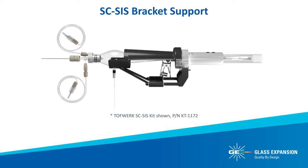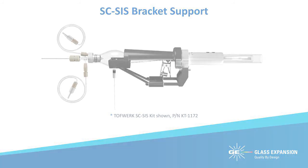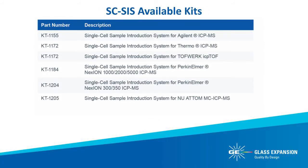Every Glass Expansion Single Cell Sample Introduction System kit is designed to suit a specific instrument model, which includes a mounting bracket support. Shown here is our complete kit for the TOFWERK ICP-TOF and the Thermo ICAP-Q/RQ/TQ quadrupole ICP-MS, Glass Expansion part number KT-1172. The system is currently compatible with all Agilent ICP-MS models, the Thermo Fisher Scientific ICAP-Q/RQ/TQ, the ICP-TOF from TOFWERK, the PerkinElmer NexION 1000, 2000, 5000 and NexION 300/350 series, and the new Attom Multi-Collector ICP-MS.